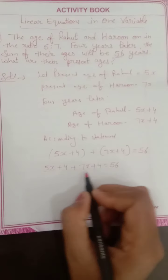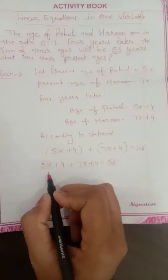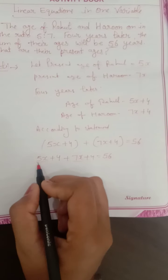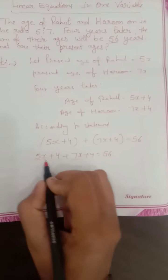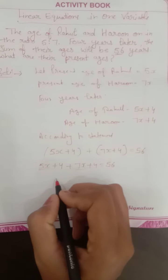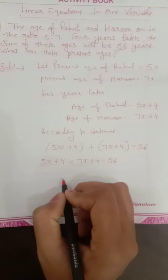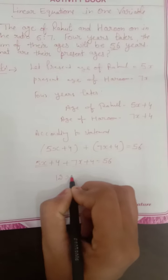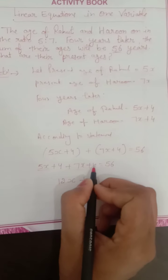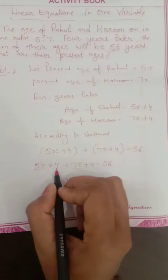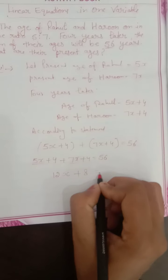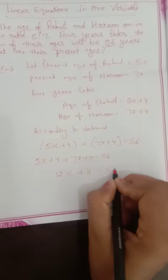Now we solve: 5x and 7x — we add them together, so we get 12x. Plus, the constants 4 and 4: 4 plus 4 gives us 8. So the equation becomes 12x plus 8 is equal to 56.